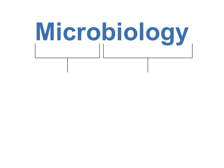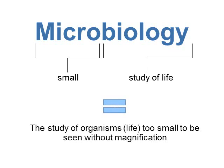I'm going to start off with defining microbiology, so you kind of understand what we're going to be looking at in this course. The micro part means small, and biology is just the study of life. So from this we can get a definition: microbiology is the study of organisms, or life, that are too small to be seen without magnification. In order to see these microorganisms, a lot of the times we need to use different types of microscopes.